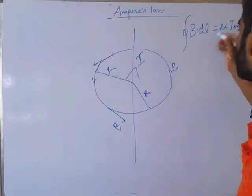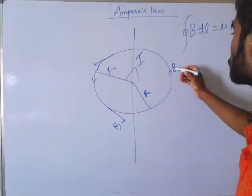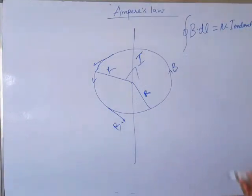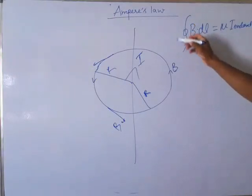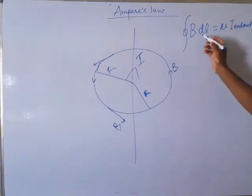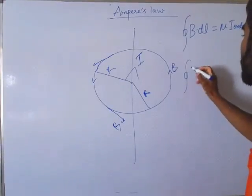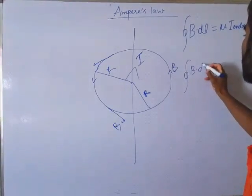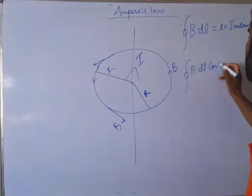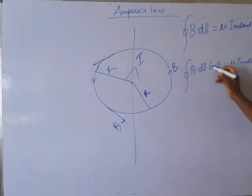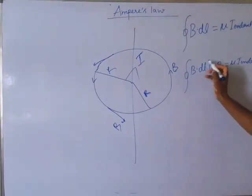And this mu is the medium in which this magnetic field is produced. This is the characteristic of medium. Now we are required to perform this mathematical operation. So this is a dot product, so expand it: B dot dL cos theta is equals to mu I enclosed. Theta is the angle between B and dL.